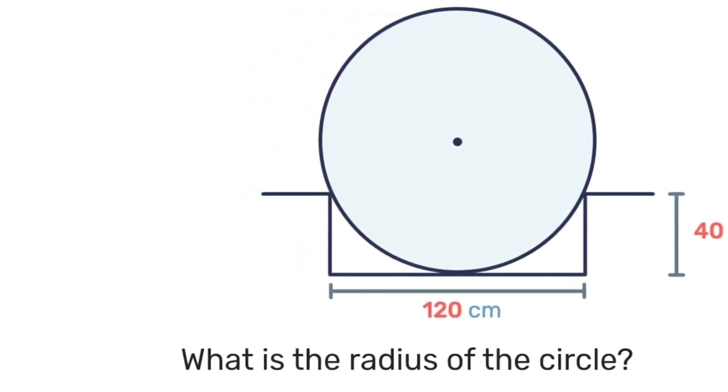So I'm gonna solve the problem like this. First we're gonna make some construction lines. We know that by definition the radius of a circle is the distance from the center to any point on the circumference.